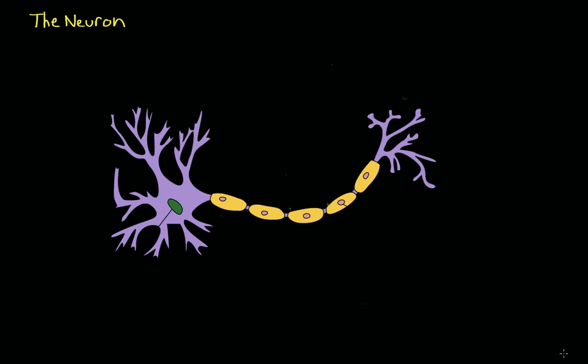Neurons, or nerve cells, are the basic cells that make up the nervous system. And just like the cells in our lungs are specialized for breathing and our red blood cells are specialized for carrying oxygen, neurons are specialized for communication.